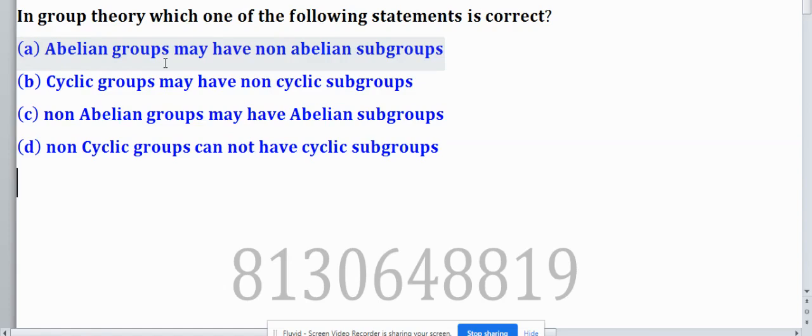Subgroups of abelian groups must be abelian. So statement (a) is correct, but by the word non-abelian, this statement becomes wrong. The first statement is wrong here.